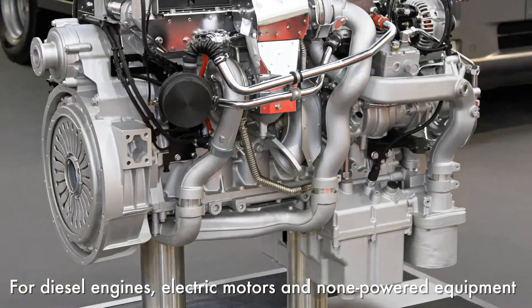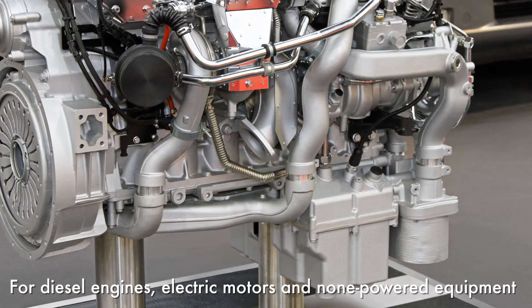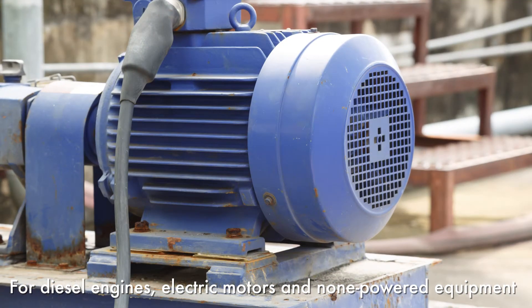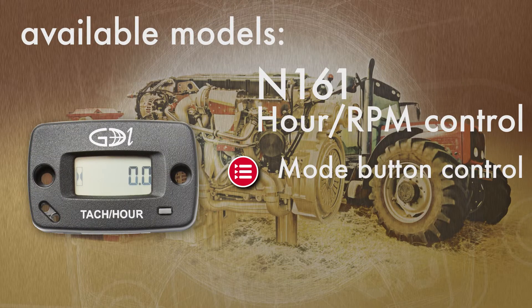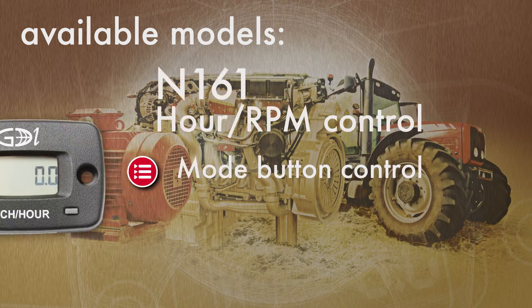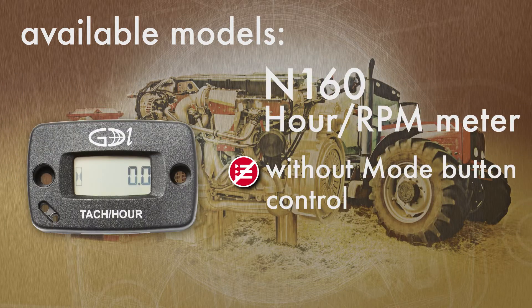The rotating shaft hour RPM meter is available in several models. You can choose between resettable versions and non-resettable versions. Timers and service intervals are included. They can be customer specific.